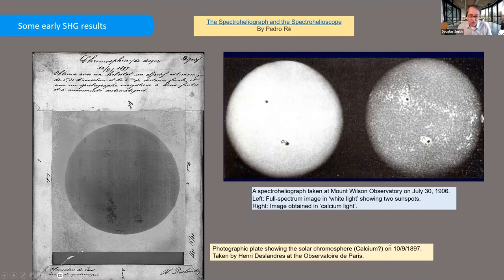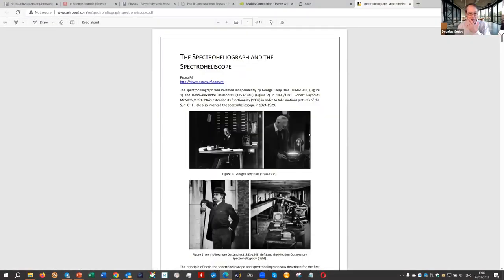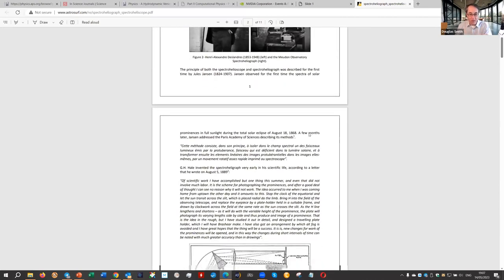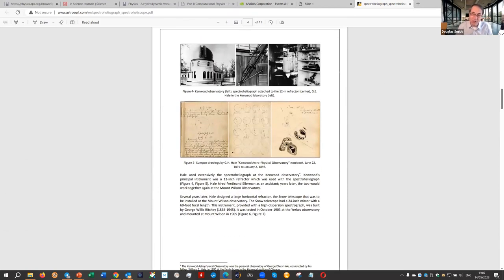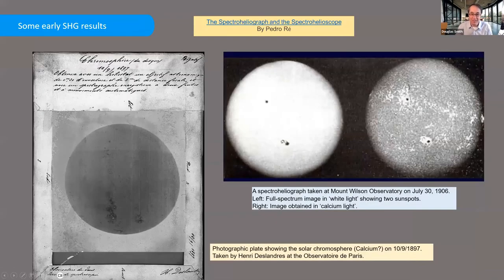I have to realize this image was taken in 1897 - it's pretty good. And this was in like 1906 - again, it's pretty good. I discovered that Pedro, who's active on SolarChat, wrote a history of the spectroheliograph. He's written a whole long essay which I didn't even realize until I started researching for this presentation. So if you're interested, you could find out more by looking at the article that he wrote.